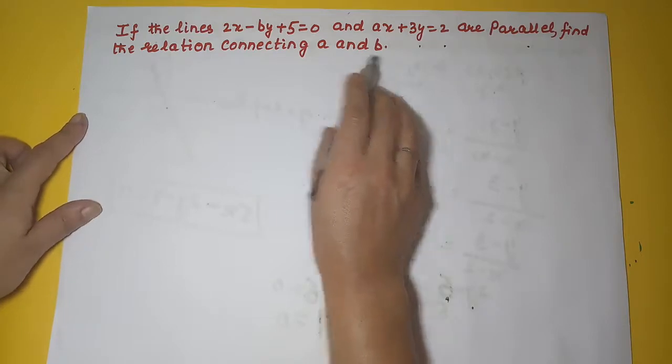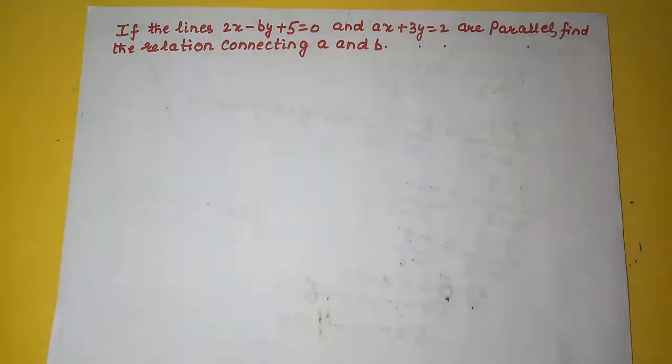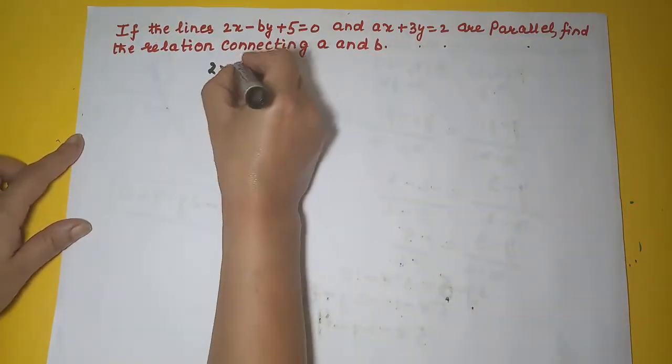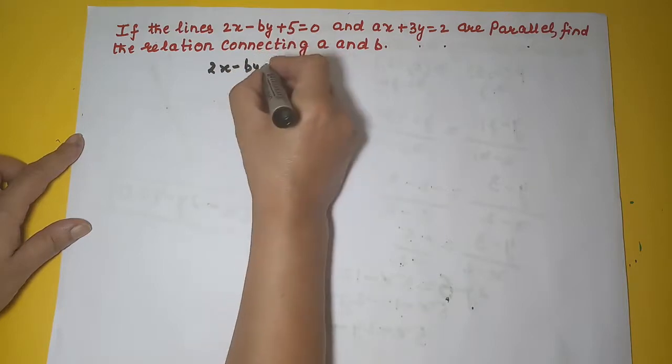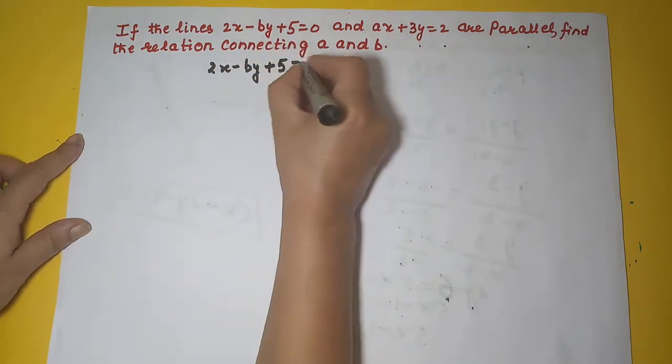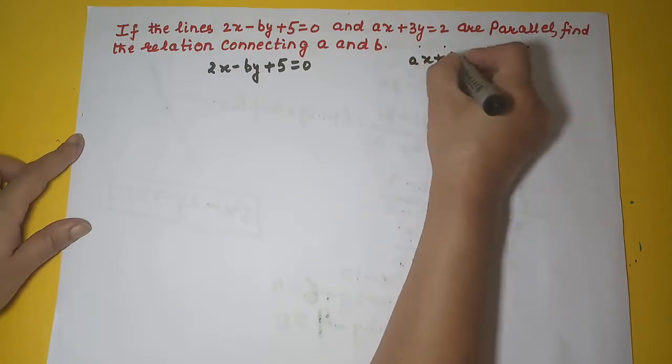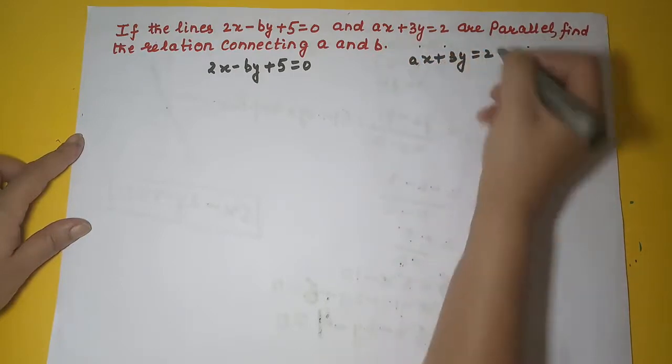Now these two lines are given parallel, so obviously their slopes will be equal. So let's write these equations: we have 2x minus by plus 5 equal to 0 and another is ax plus 3y equal to 2.